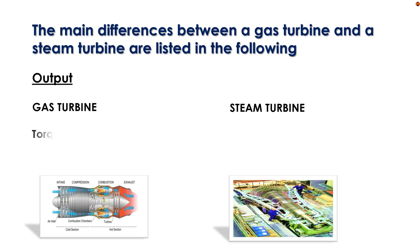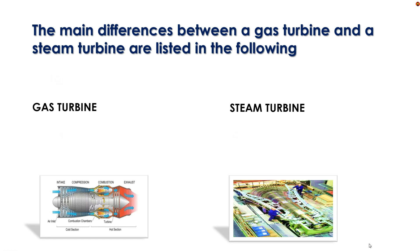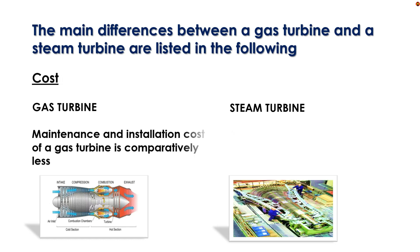Output: Gas turbine output is torque or thrust. Steam turbine output is torque. Cost: Maintenance and installation cost of gas turbine is comparatively less. Steam turbine cost is higher.